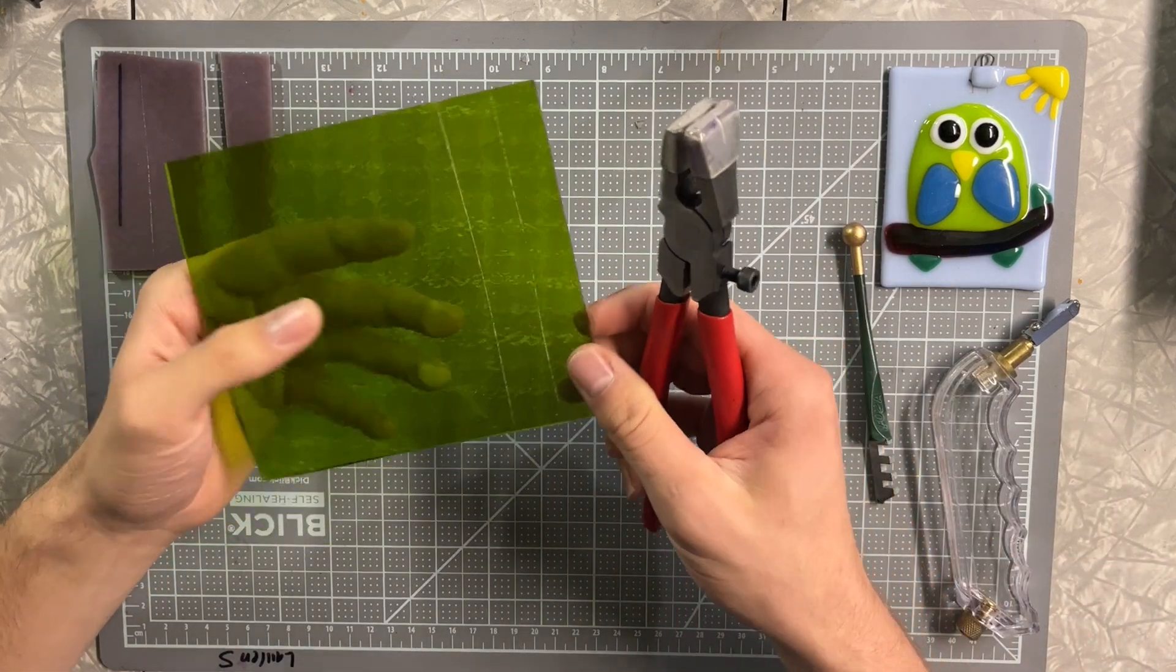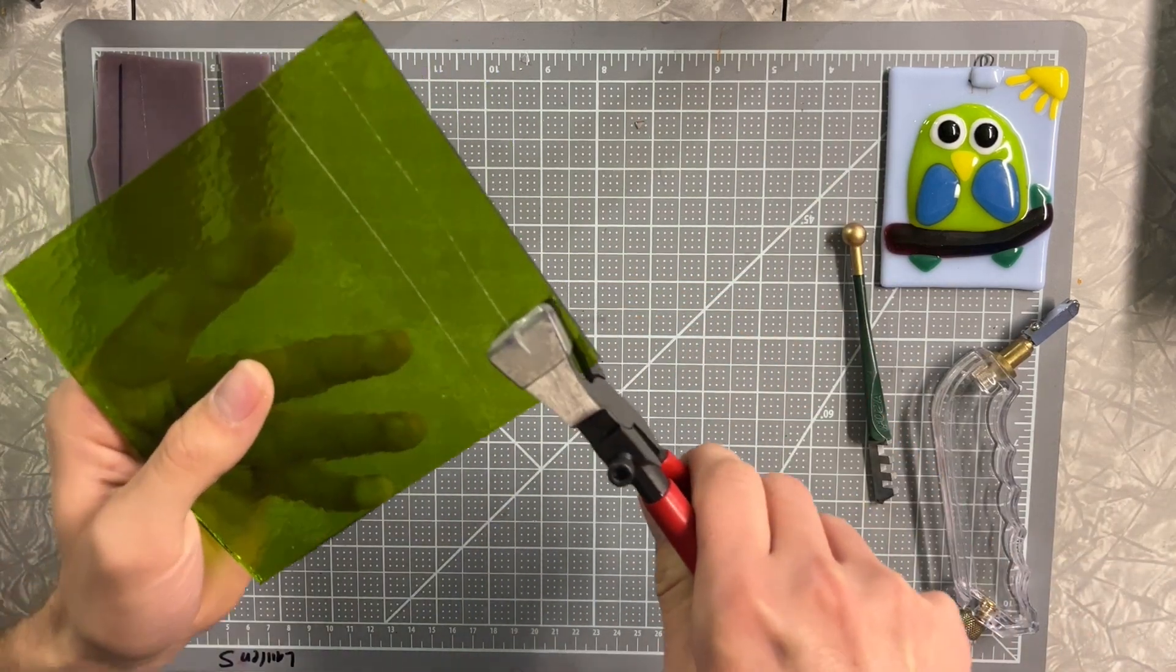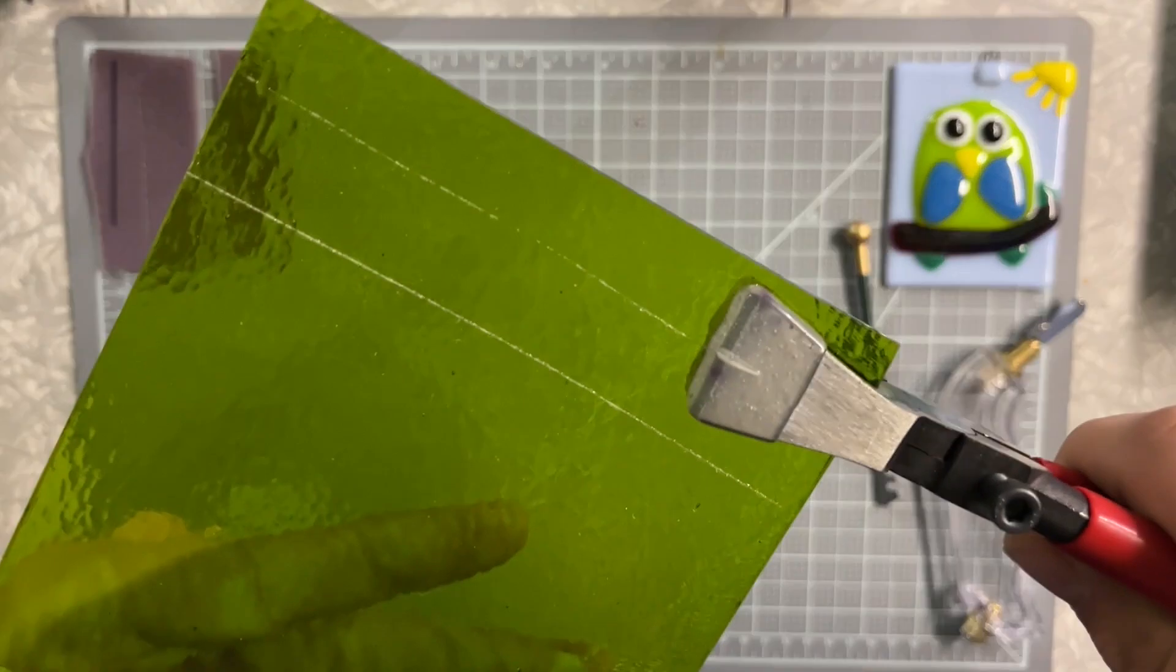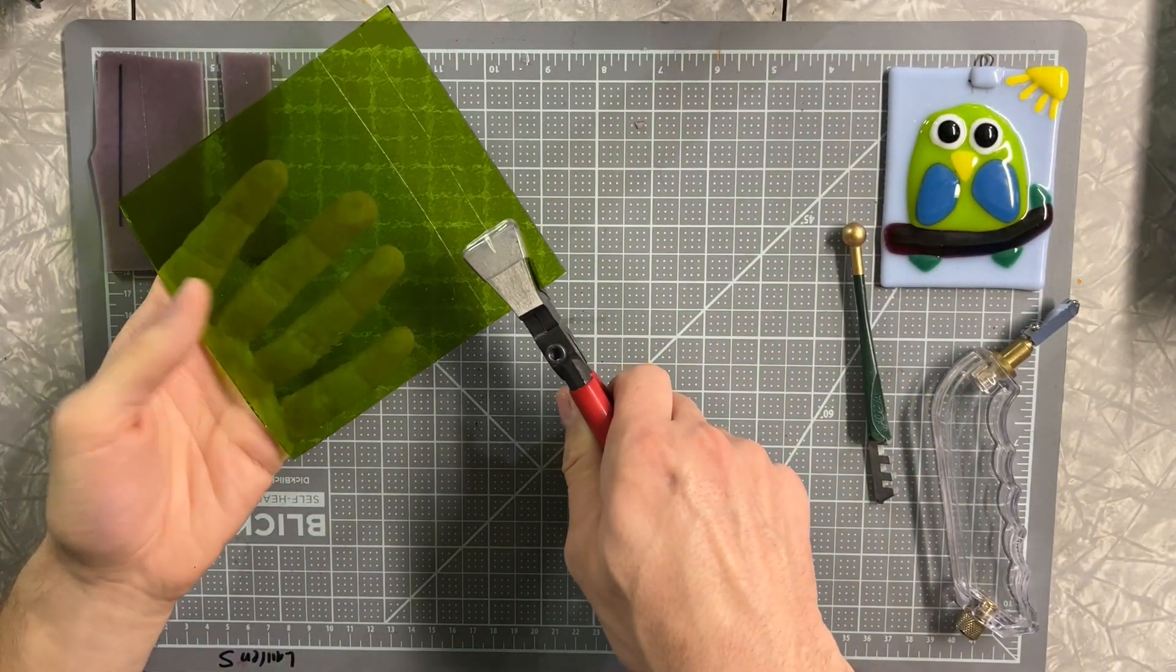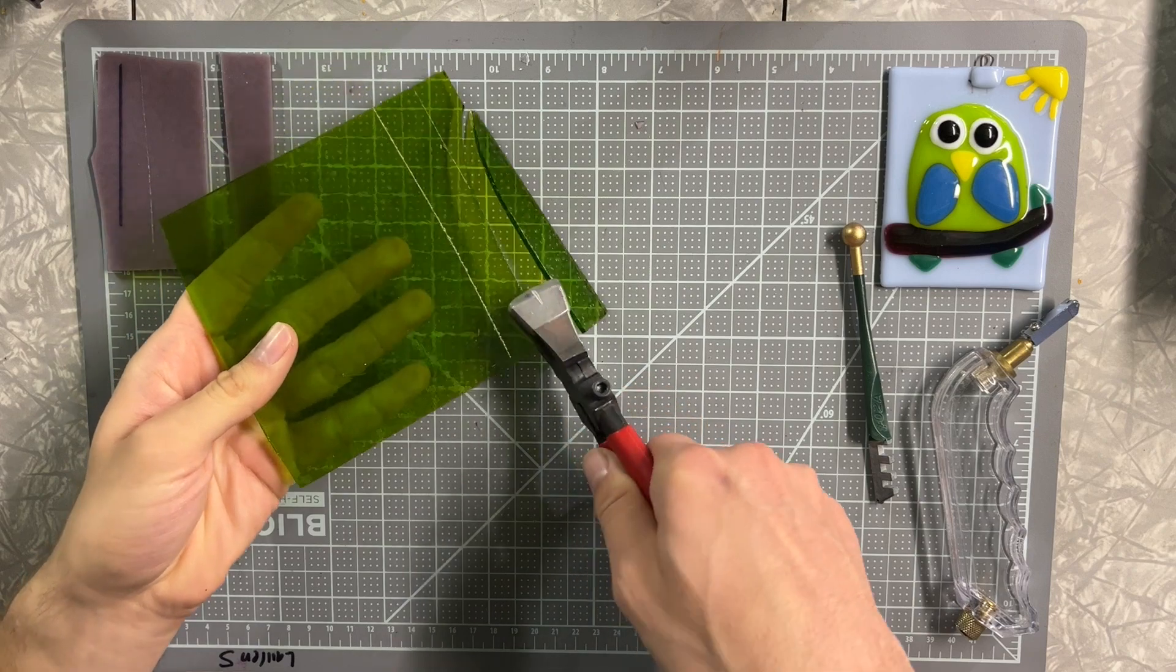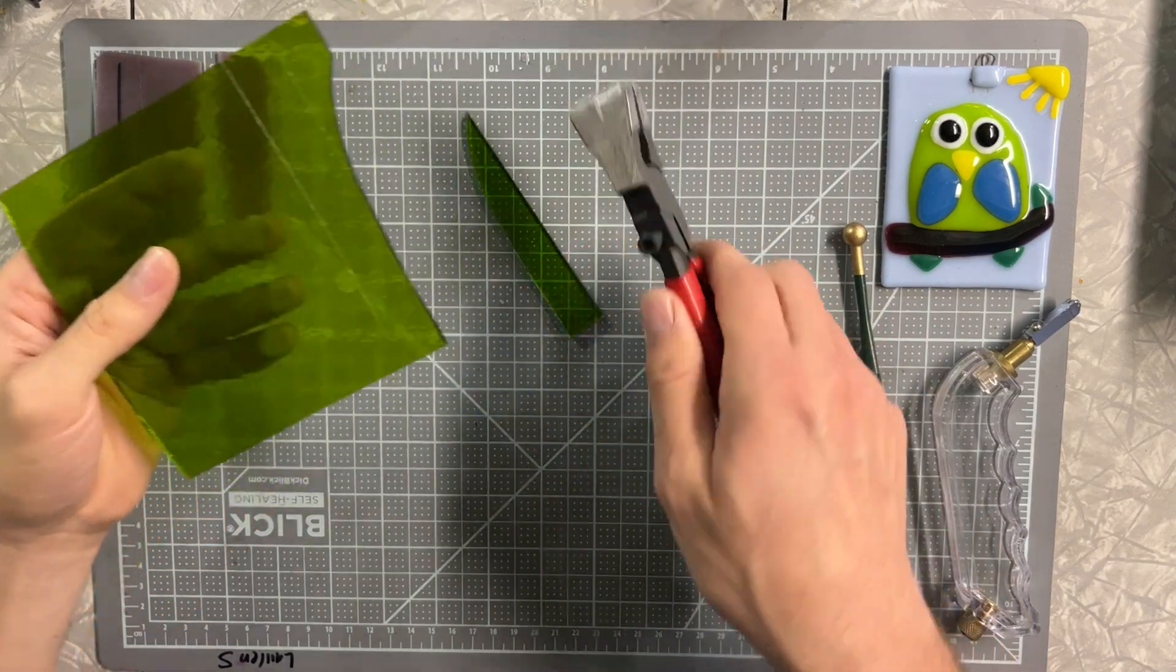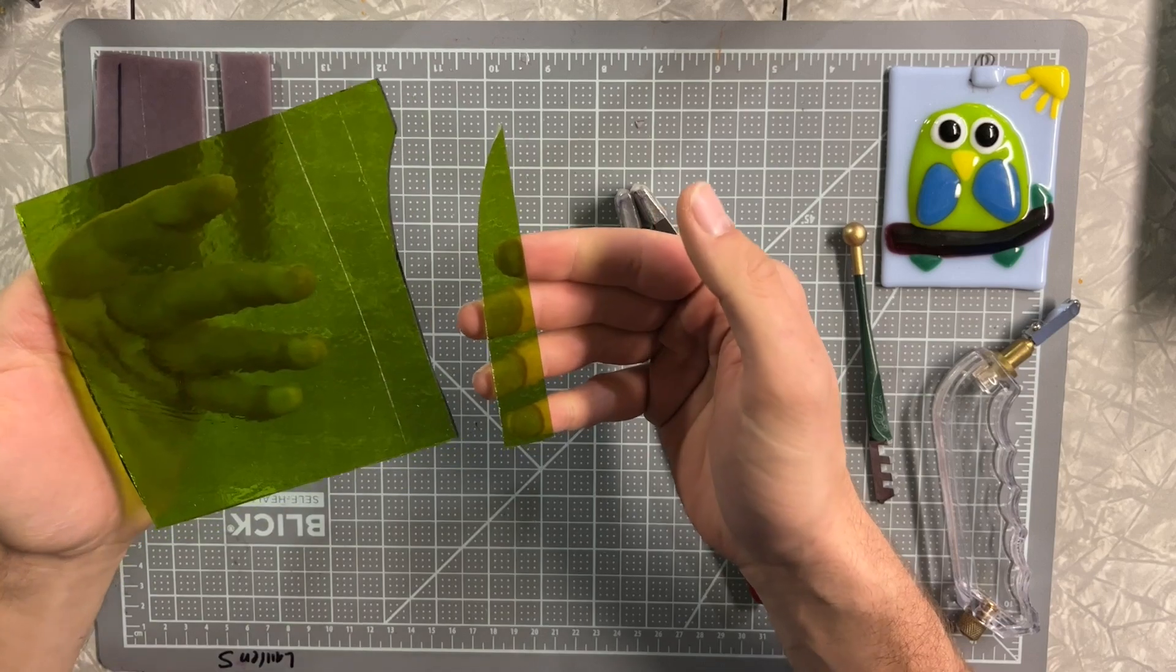You can see I have two scores on my glass now. We'll go ahead and take our breaking pliers and line our mark up just like that. It doesn't take very much, just a little squeeze, and you can see the glass broke right off.